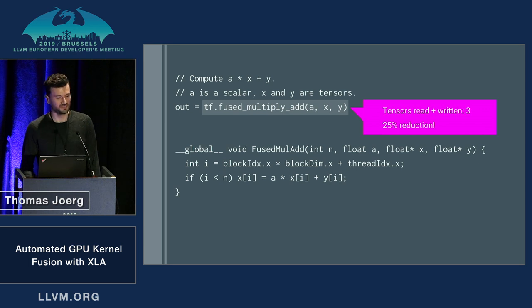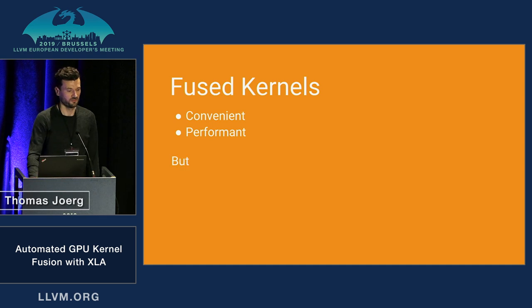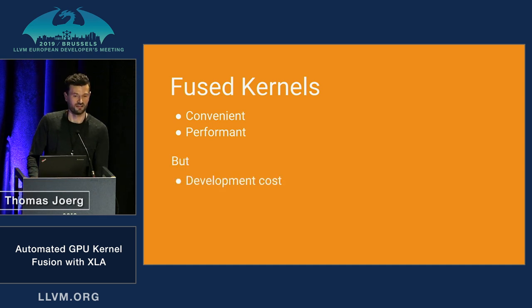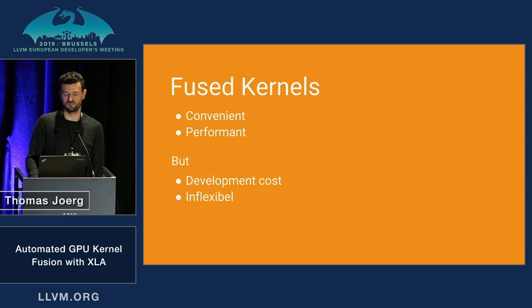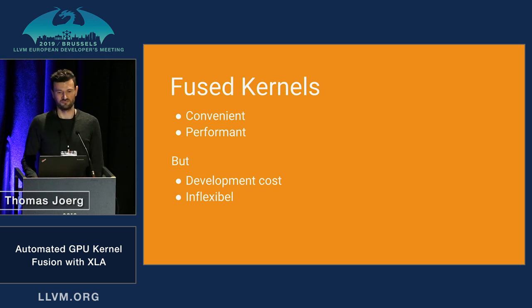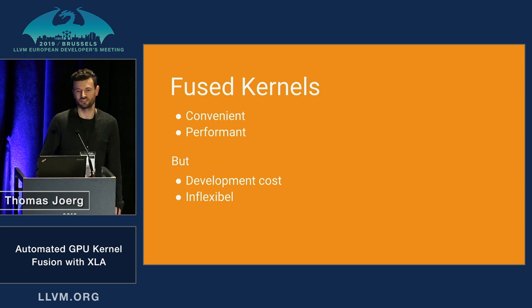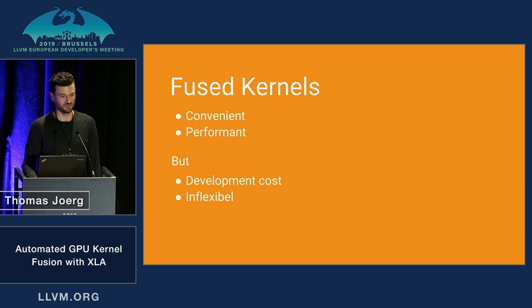One thing you can see here is that this is not transparent to the user — we had to register a fused multiply-add operation, so the optimization burden is on the user. These fused kernels need to be written by somebody; it's still fairly common for them to be handwritten by high performance computing experts, so there's a non-trivial development cost. These fused kernels are also inflexible: if they do what you need, that's great, but if you need something slightly different, you might be out of luck.